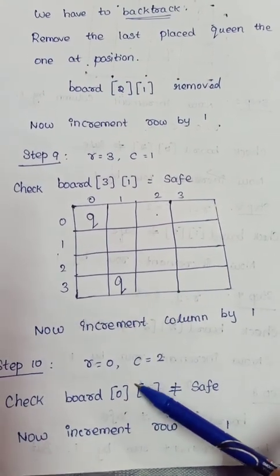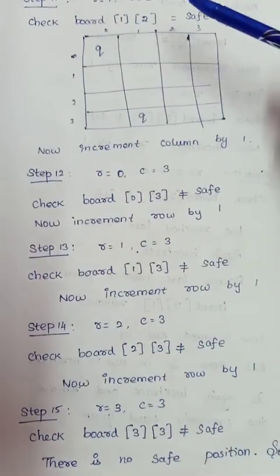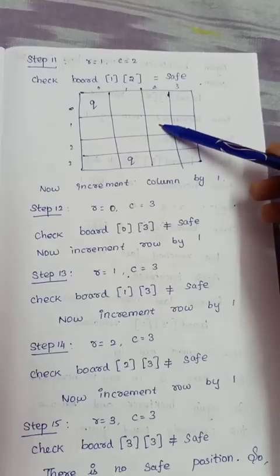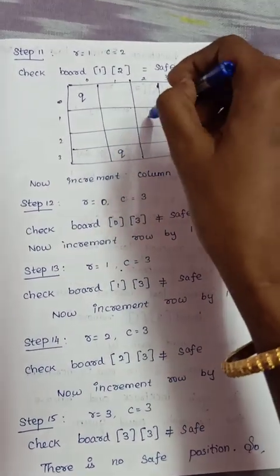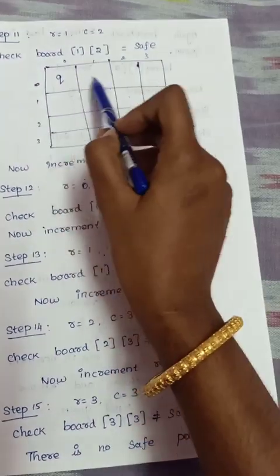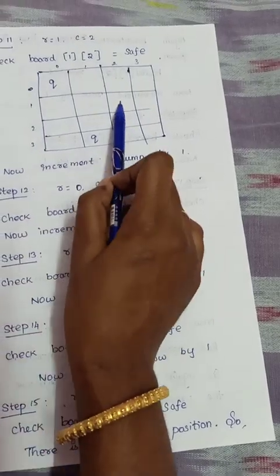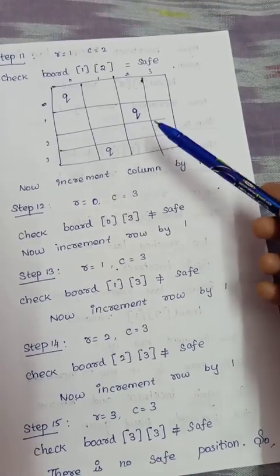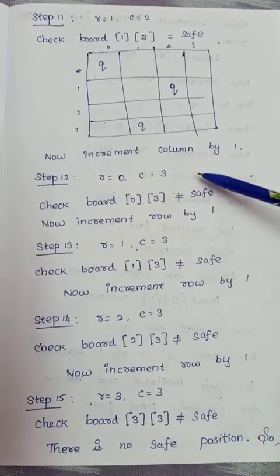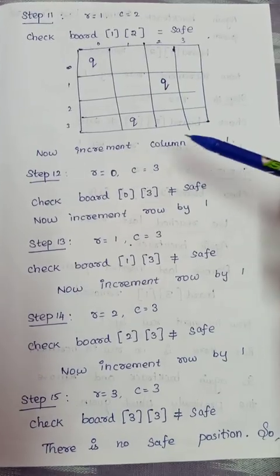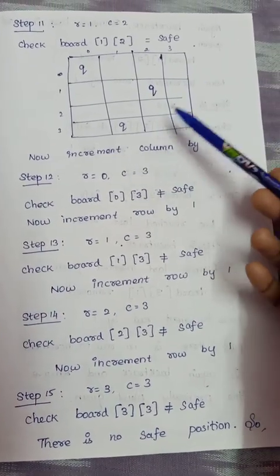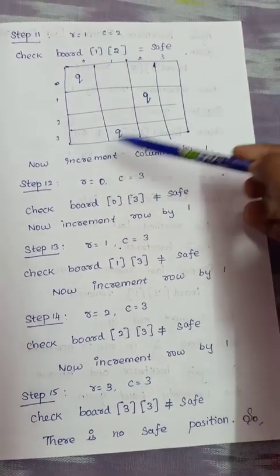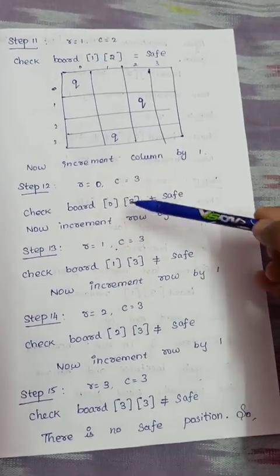We try row 1, column 2 — board[1][2]. We check row, column, and diagonal attacks. If unsafe, we increment the column by 1, reset the row to 0, and try board[0][3].